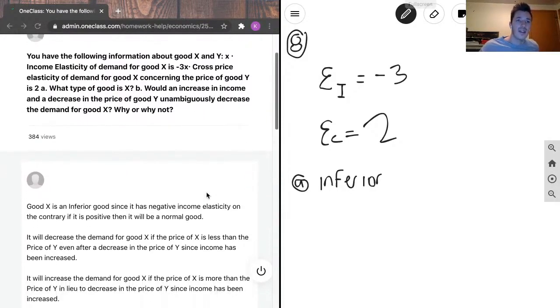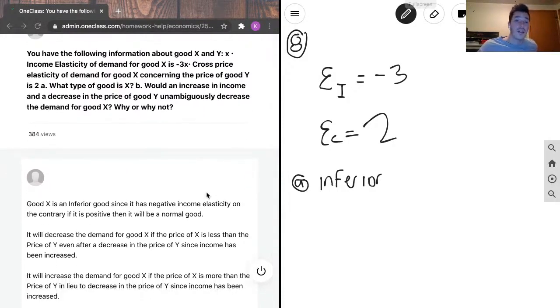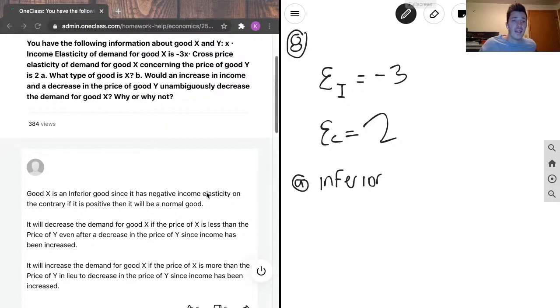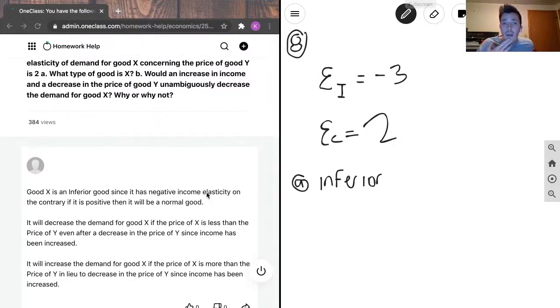Part B: Would an increase in income and a decrease in the price of good Y unambiguously decrease the demand for good X? Why or why not? Our junior tutor has said that it will decrease the demand for good X if the price of X is less than the price of Y, even after a decrease in the price of Y, since income has increased.